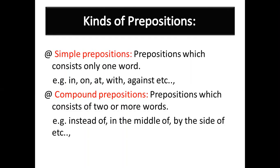The third type is double prepositions. For example: 'The dog jumped onto the bed and left marks upon the sheets.' Here, 'onto' is a single preposition but it is made up of two prepositions — on plus to. Similarly, 'upon' is made up of up plus on. So you can combine two prepositions and use them as a double preposition.